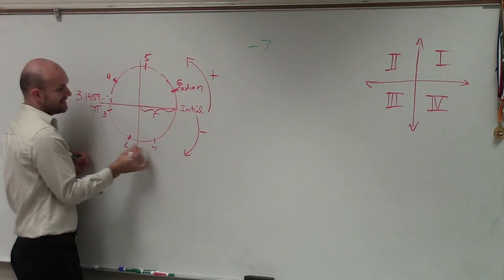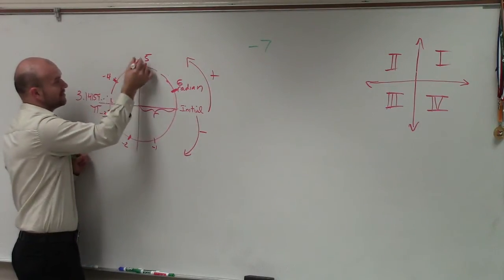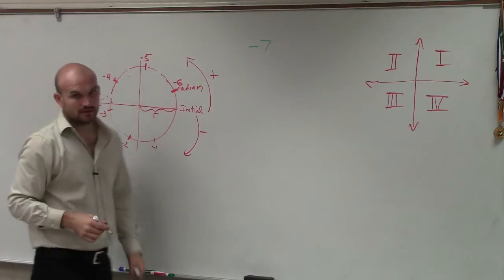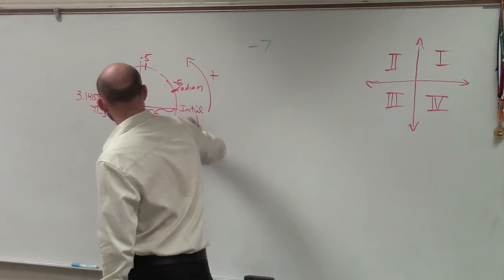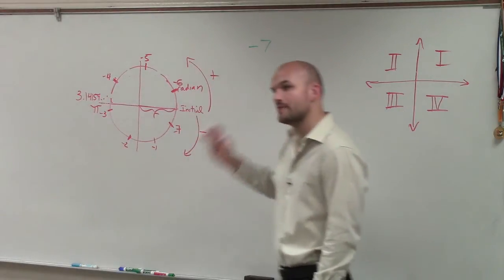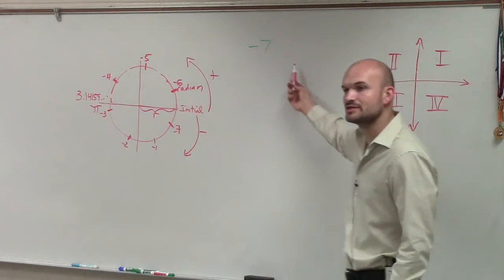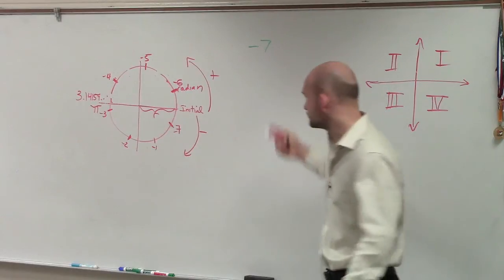Now these are all in the negative direction. Does everybody understand that? OK. So if I was going to go one more, that's going to be right around there as you keep on wrapping around. So what quadrant is negative 7 in? 4. Quadrant 4.